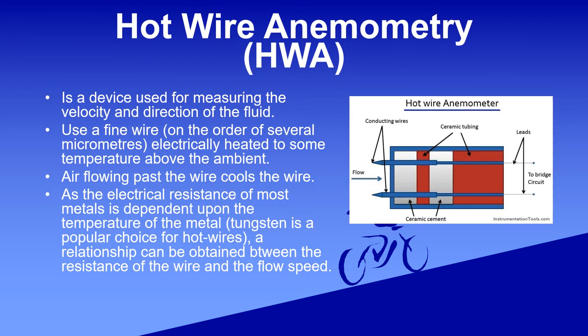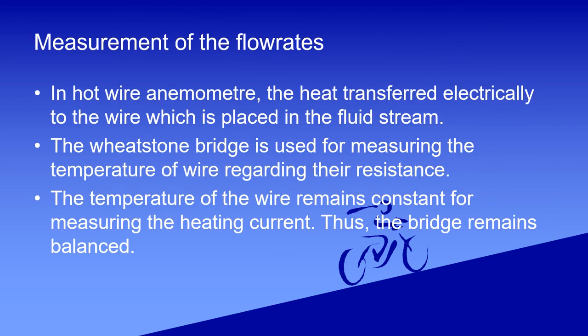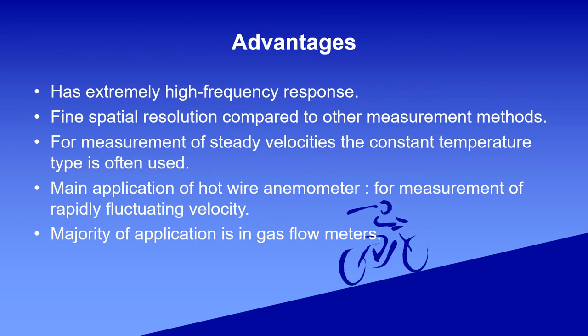The last device is Hot Wire Anemometry, used for measuring the velocity and direction of fluid. It uses a fine wire on the order of several micrometers, electrically heated to some temperature above ambient. The air flowing past the wire cools the wire. In hot wire anemometry, the heat is transferred electrically to the wire, and a Wheatstone bridge is used for measuring the temperature of the wire.